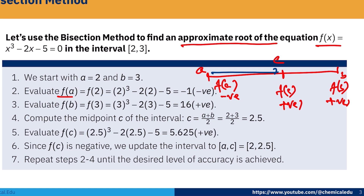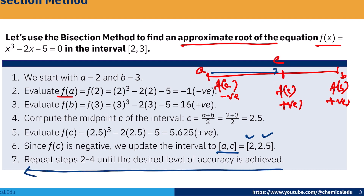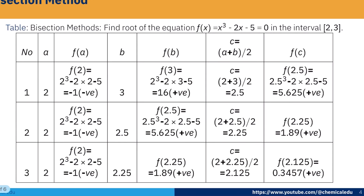Since f(c) is positive and f(a) is negative, the updated interval is [a, c], meaning a = 2 and c = 2.5. So the root lies between 2 and 2.5. We repeat the same steps until the desired level of accuracy is achieved. Now I am showing all these details in the iteration table, with columns for iteration number, a, b, c, and f(c).